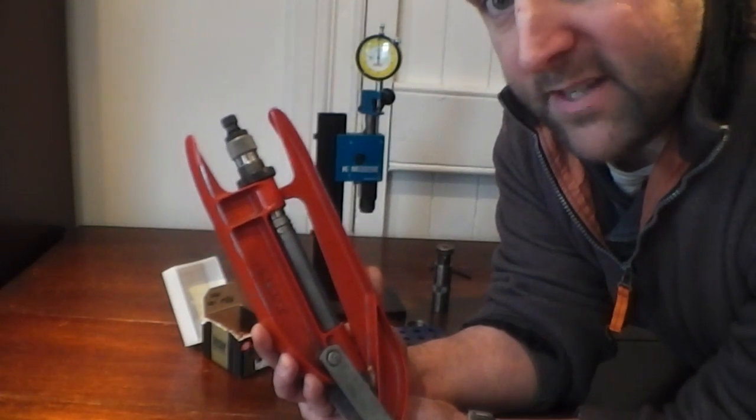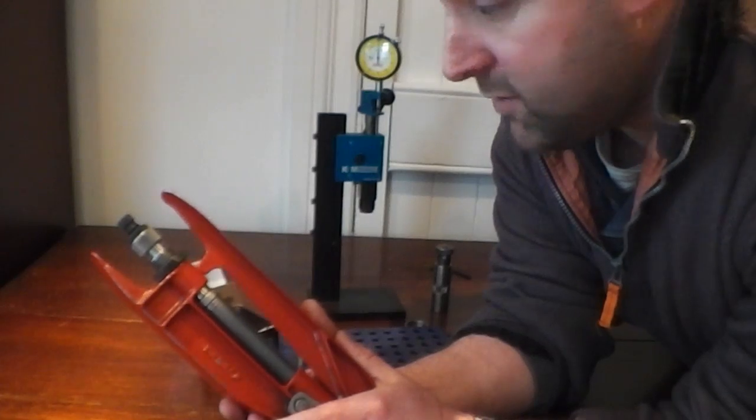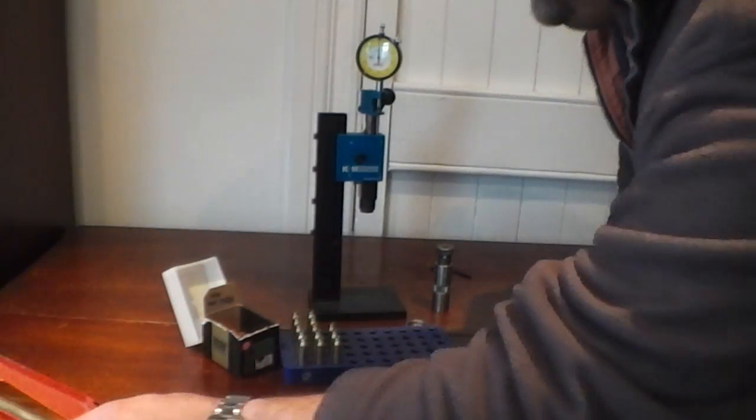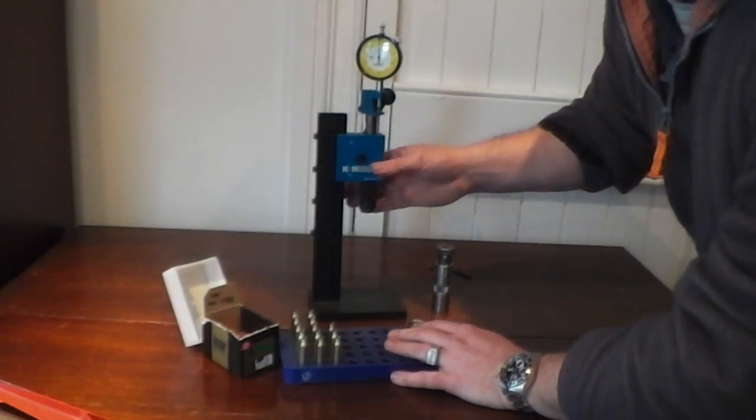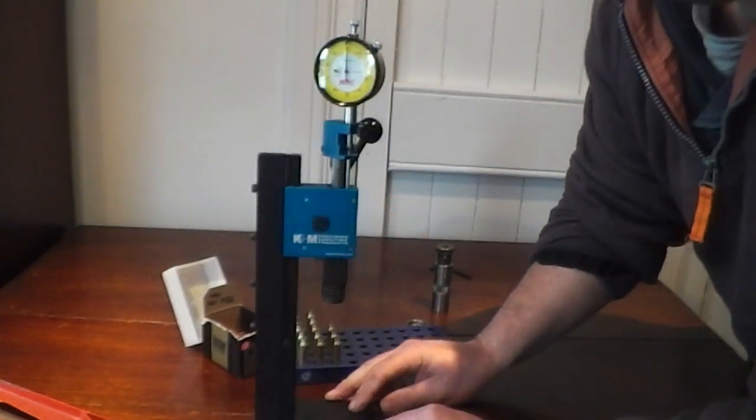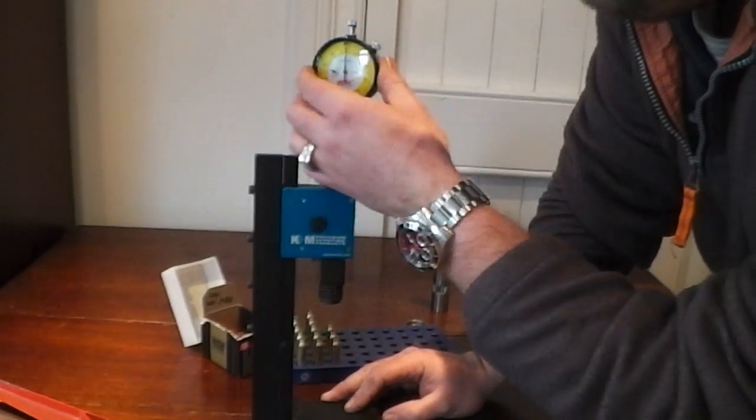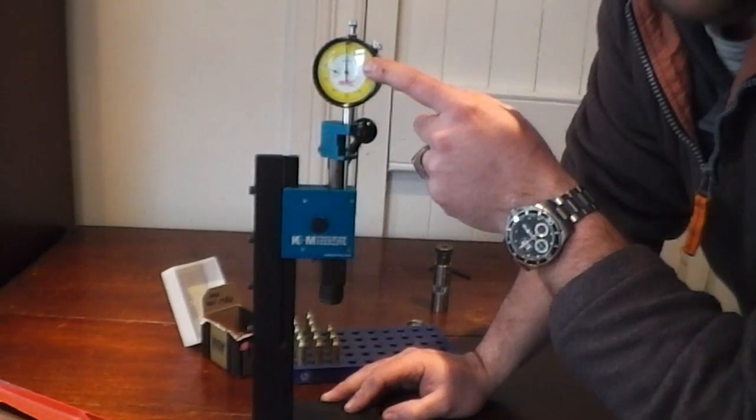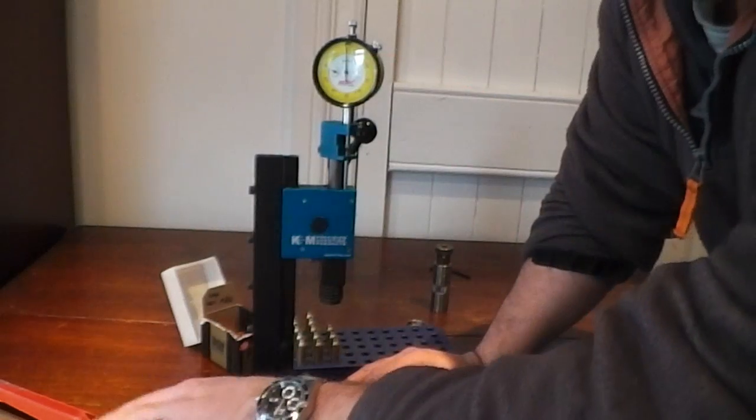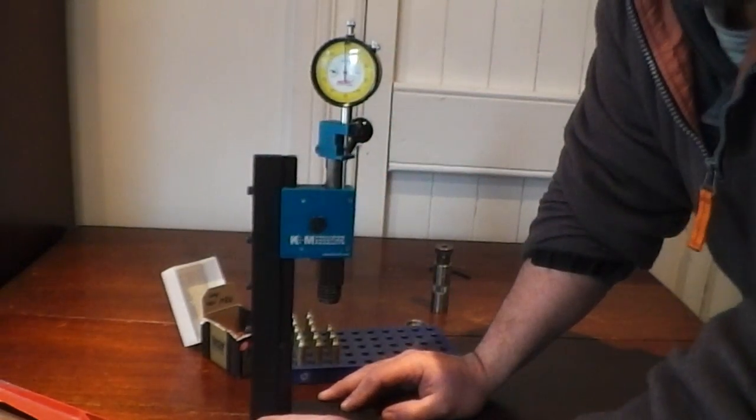I've kind of taken that a step further after a conversation with Brian Fox of Fox Firearms. He said he had an arbor press from K&M, the neck turning people, and when you seat with this it gives you a measurement of how much force you were using. That takes the feel of the hand press to another level and I was most interested.